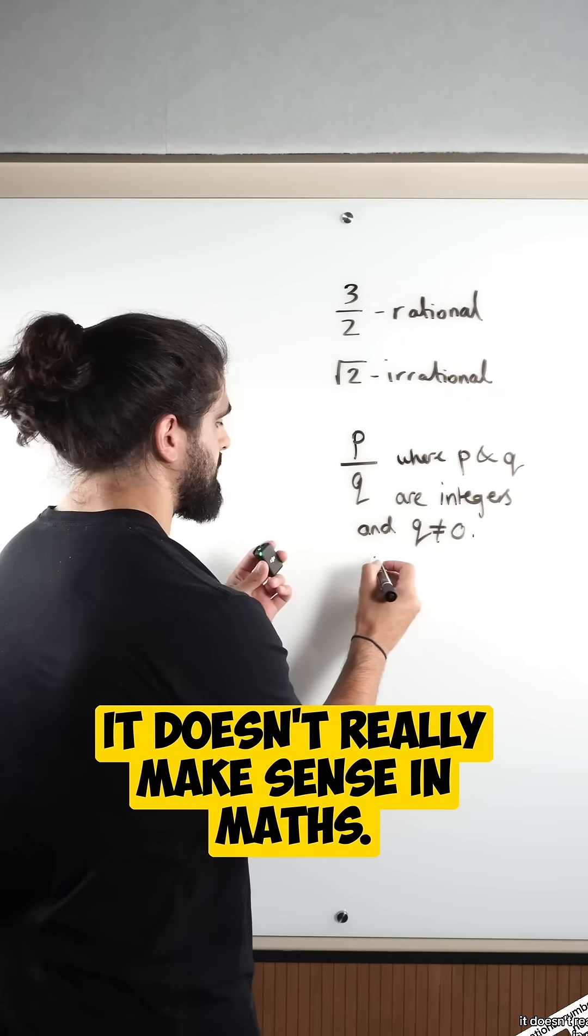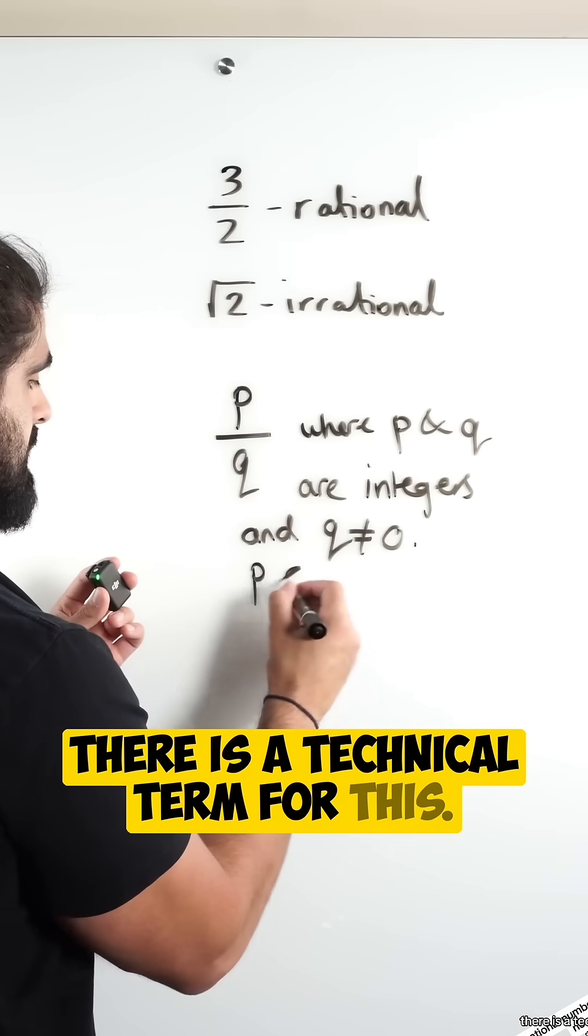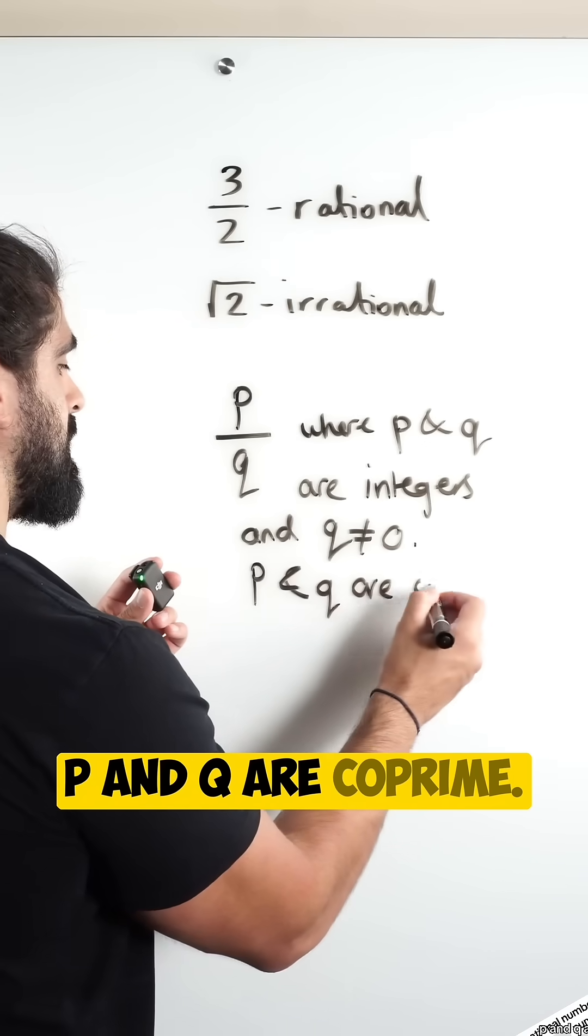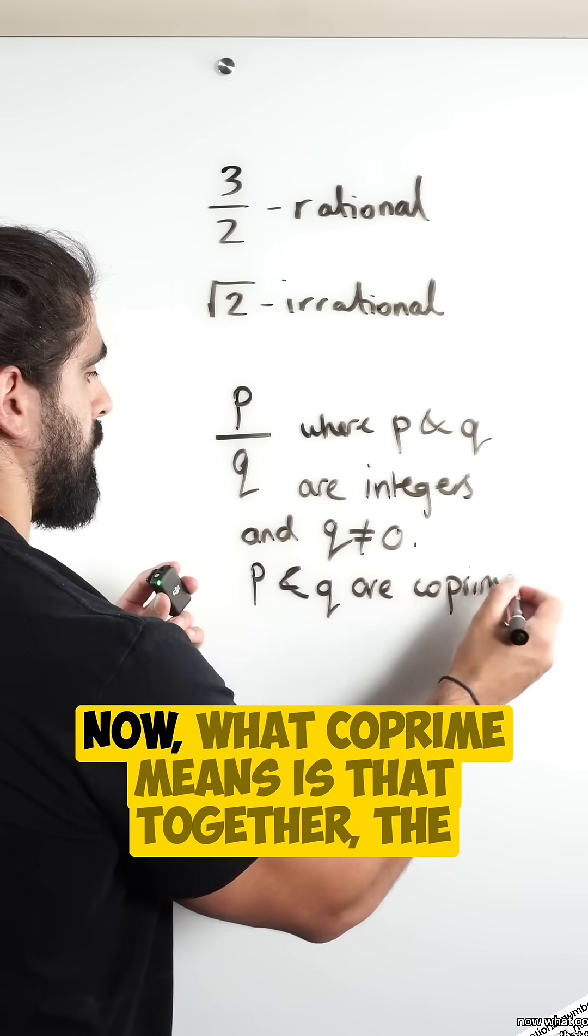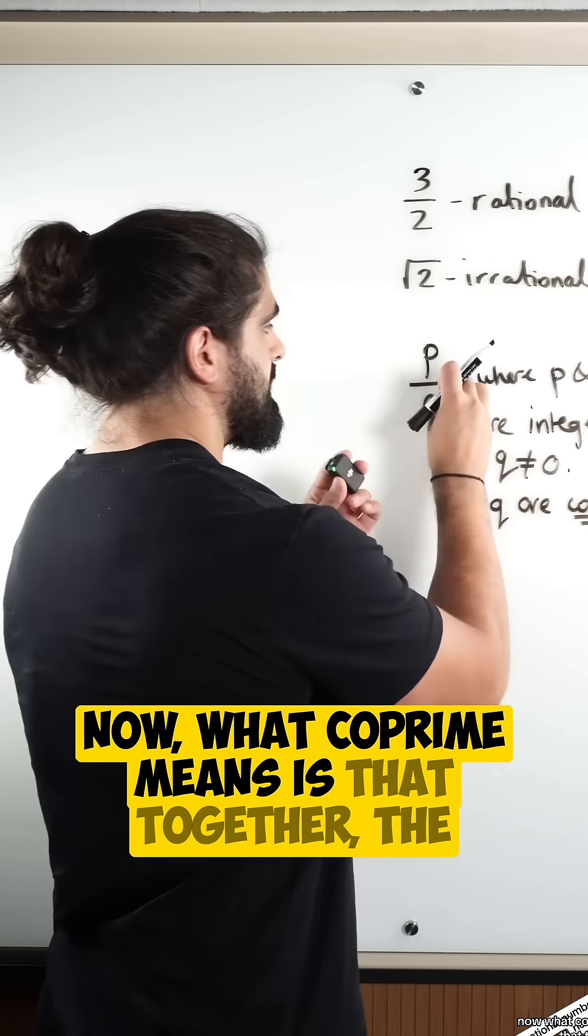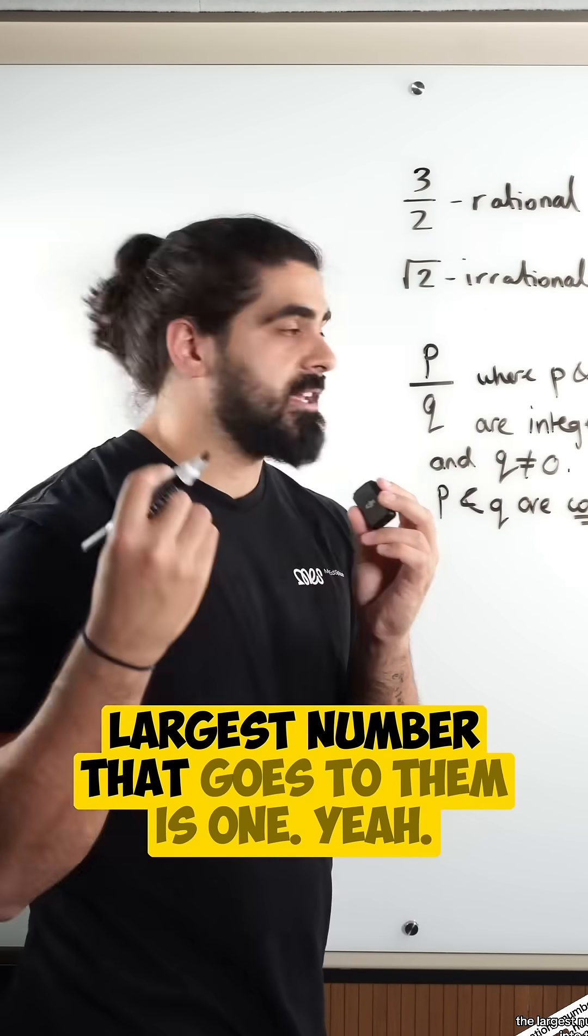It doesn't really make sense. In maths, there is a technical term for this, p and q are co-prime. Now, what co-prime means is that together, the largest number that goes into them is 1.